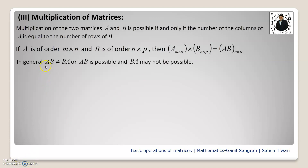In general, A times B is not equal to B times A — commutativity is not satisfied for matrix multiplication. It is not satisfied for every matrix. It may also happen that A times B is possible but B times A is not possible, or vice versa. So commutativity for matrix multiplication is generally not satisfied. However, for addition, A plus B equals B plus A, but for subtraction, A minus B never equals B minus A.